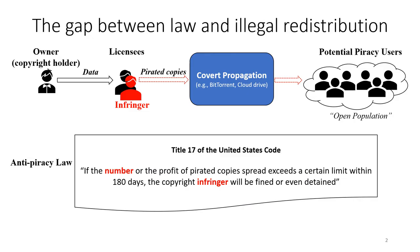We all know that illegal redistribution is a pervasive social problem. A typical illegal redistribution works as follows. First, there is an owner who is also the copyright holder, who sells the data such as images, audios, and software to the licensees. And among the licensees, there might be an infringer who sends pirated copies illegally through covert channels to the potential piracy users.